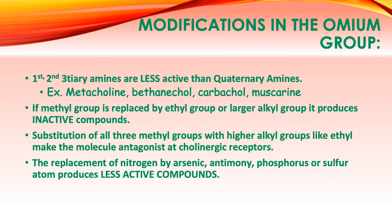Now let's move forward to the different modifications we can make to acetylcholine. If you recall, we have the onium group, the ethylene bridge, and the acyl group. For indirect acting cholinomimetics, these are the things to remember in the structure-activity relationship. First, primary, secondary, and tertiary amines are less active than quaternary amines, so it is favorable to have quaternary amines — for example, methacholine, bethanechol, carbachol, and muscarine.